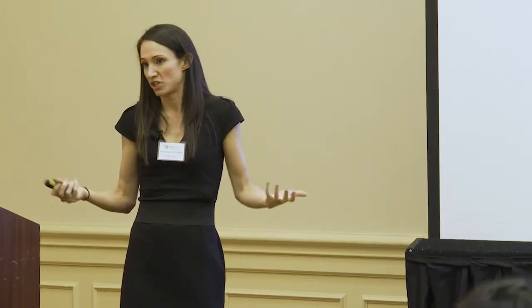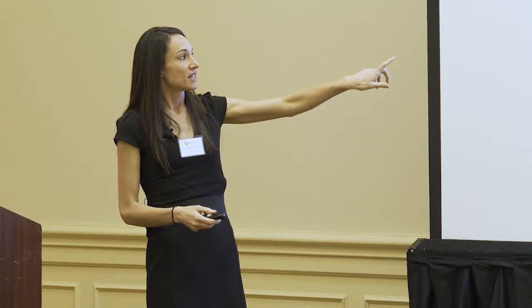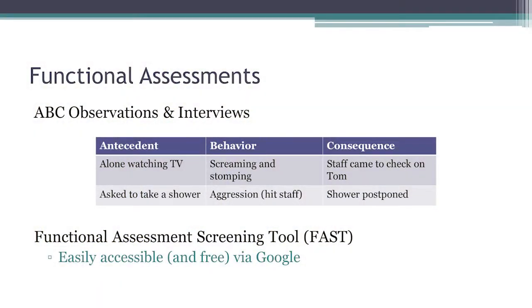Direct observation — this is like your ABC assessment. You're directly observing the child, taking notes, looking for patterns in what happens right before the behavior and what happens after. Based on those correlations, you're making assumptions about what might be the cause or function. But that's still just correlation, and we know correlation doesn't equal causation. Experimental analysis is where you're really testing variables and experimental control — this is the most valid type of assessment we have, but it does require specialized training.